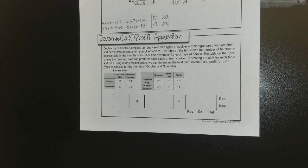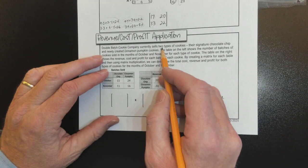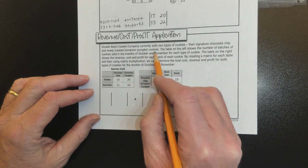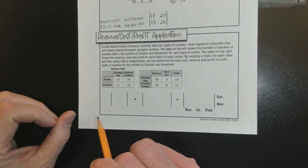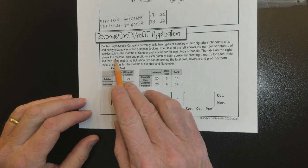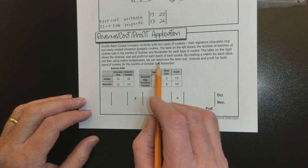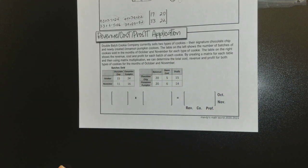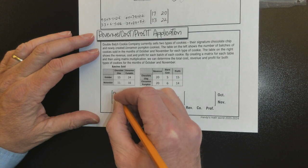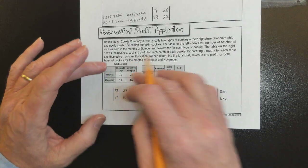One more example, and then I'll go to the next sheet here. Double batch cookie company currently sells two types of cookies. Their signature chocolate chip and newly created cinnamon pumpkin cookies. The table on the left shows the number of cookies sold in the months of October and November for each type of cookie. The table on the right shows the revenue, cost, and profit for each batch of cookie by creating a matrix for each table. Then using matrix multiplication, we can determine the total cost, revenue, and profit for both types of cookies for the months of October and November.